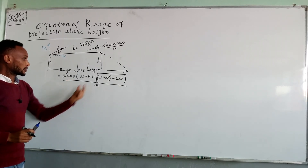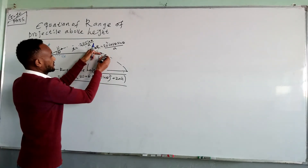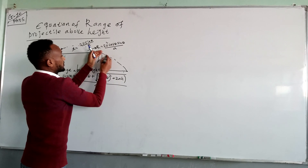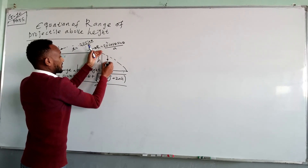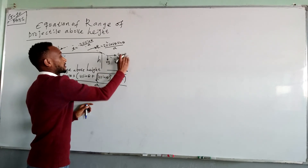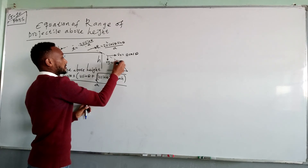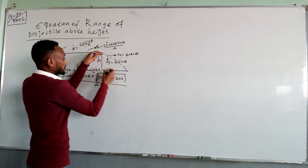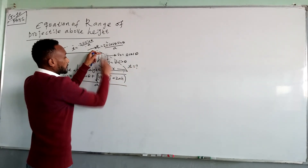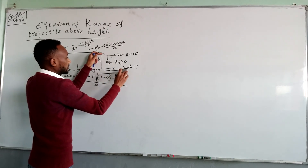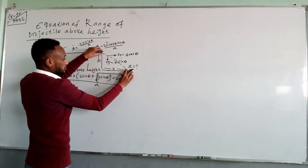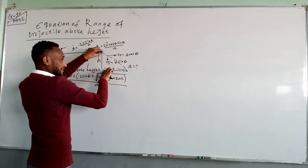Let's derive these equations. To derive these equations, we must note that there is motion after the projectile is launched at angle theta. We have vertical and horizontal components: u_x equals u cos θ and the vertical component is u sin θ. For this second motion, we need to find the horizontal distance x and the time it takes from this point to the landing point.